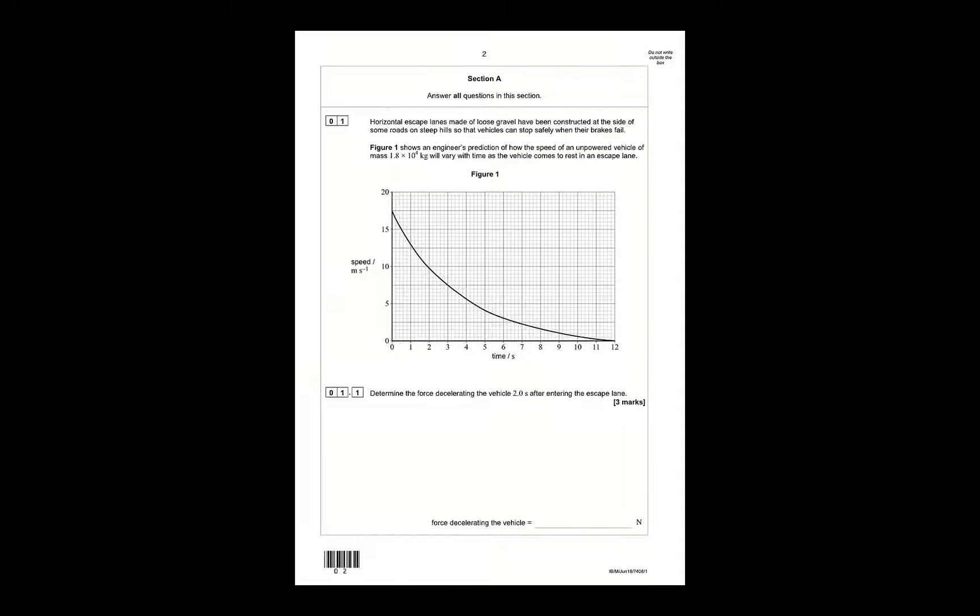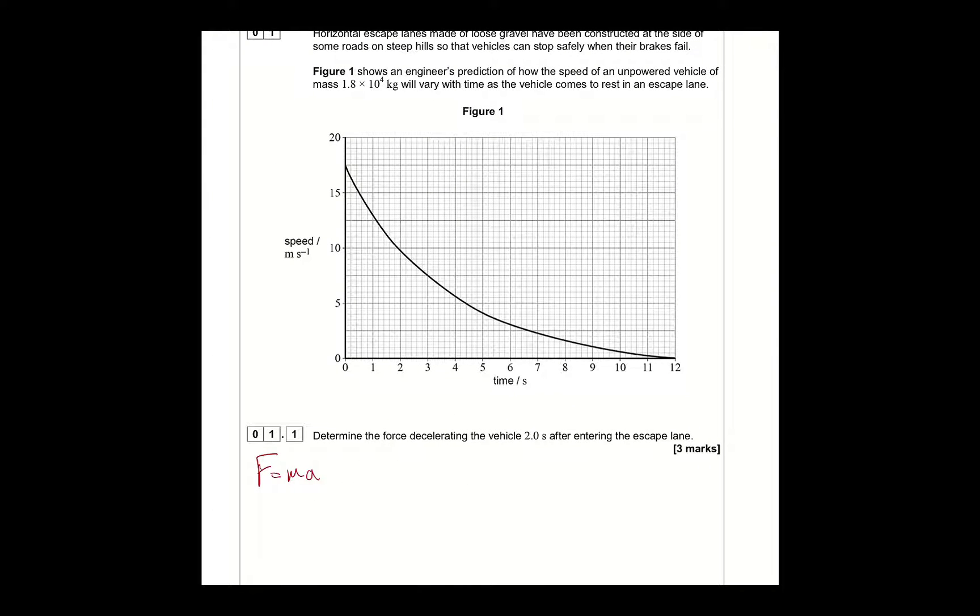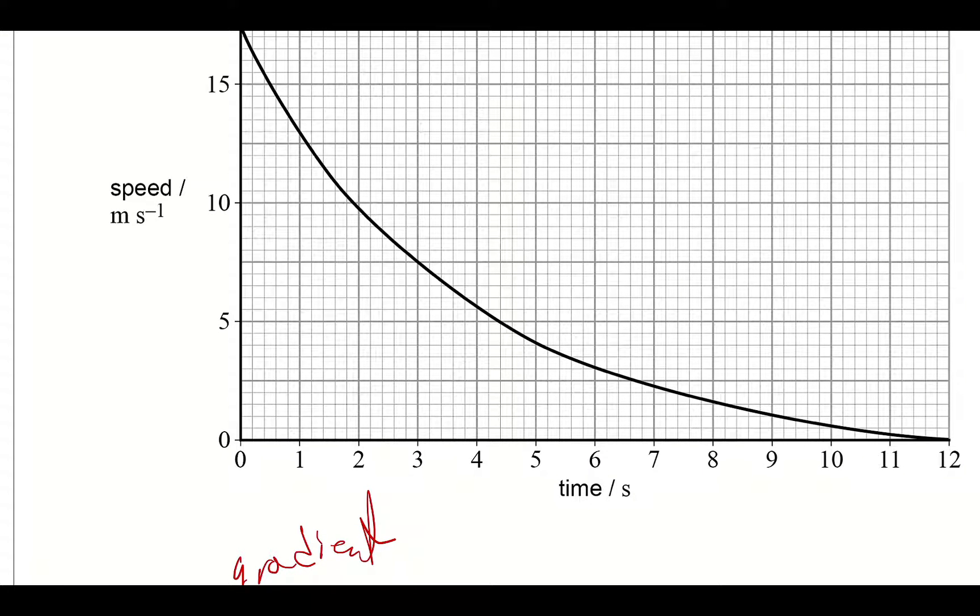Okay. Determine the force decelerating the vehicle two seconds after entering the escape lane. Okay, so what you have to do for this, you need to use the fact that F equals M-A, and what you have to do is... The instantaneous acceleration at any time will be the gradient of a velocity time graph or a speed time graph. So you are going to have to take the gradient, which means I'm going to need some kind of straight edge. And I'm going to set this so that it makes straight lines. So, using a ruler and at two seconds you draw a gradient, and you want a reasonably sized gradient.